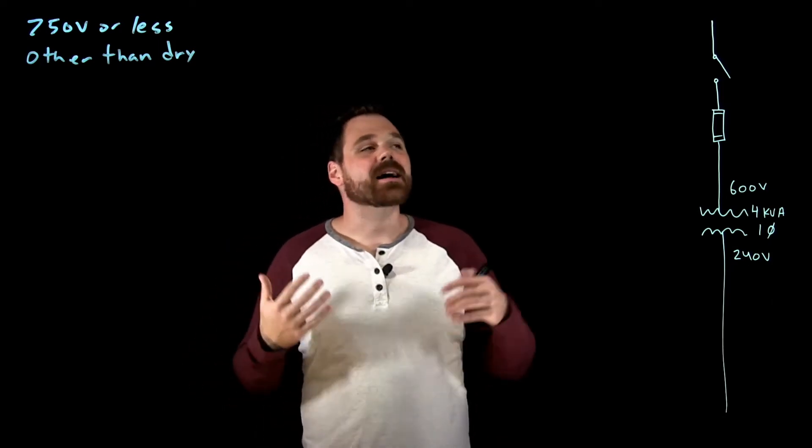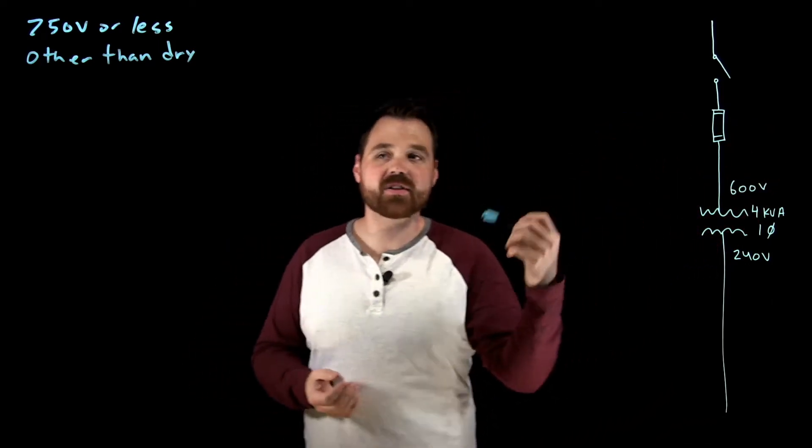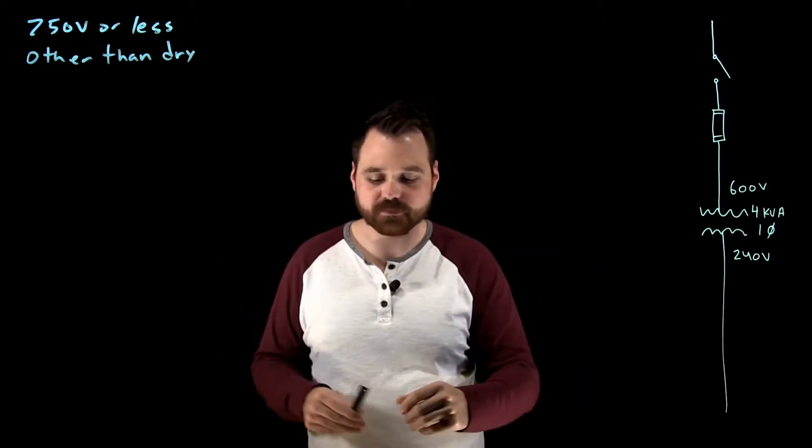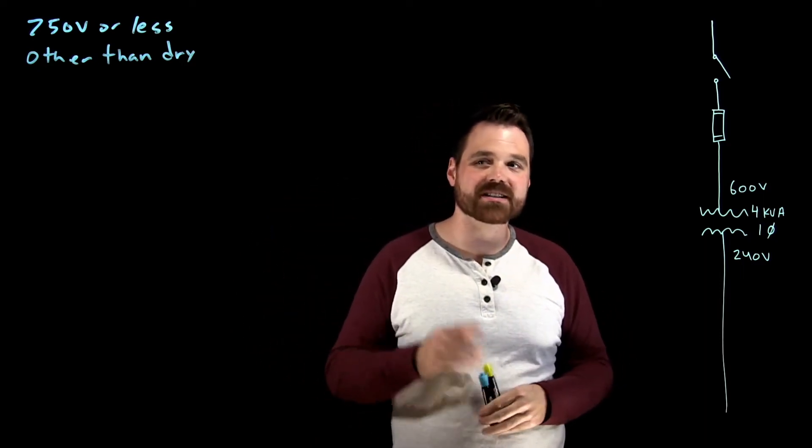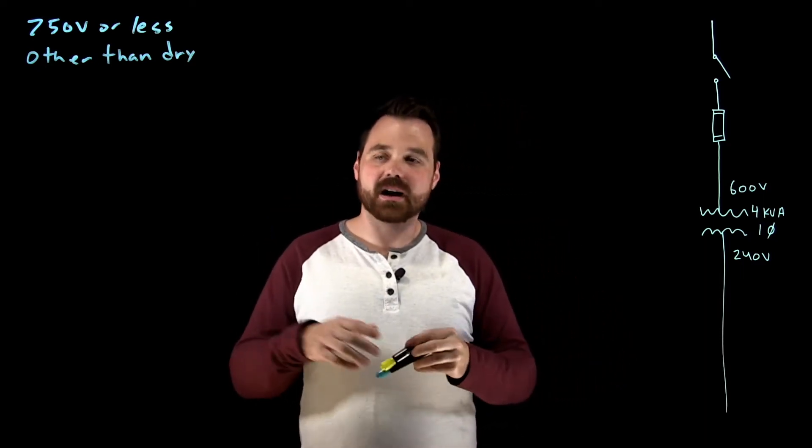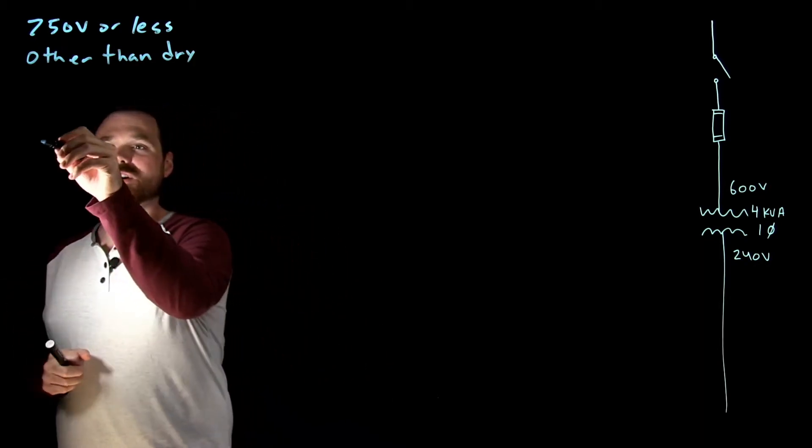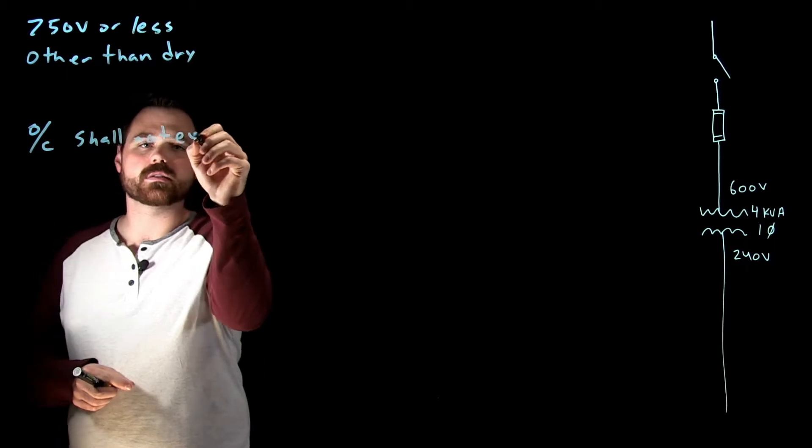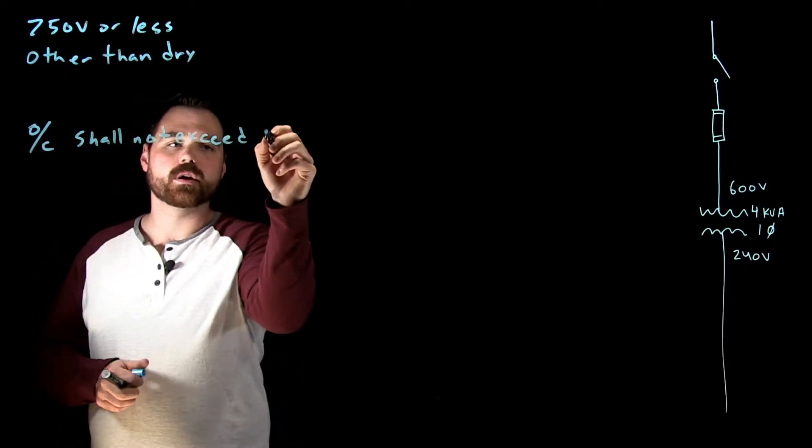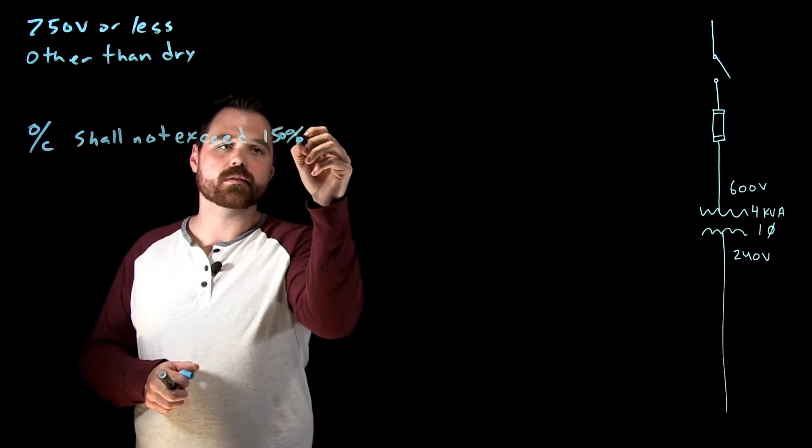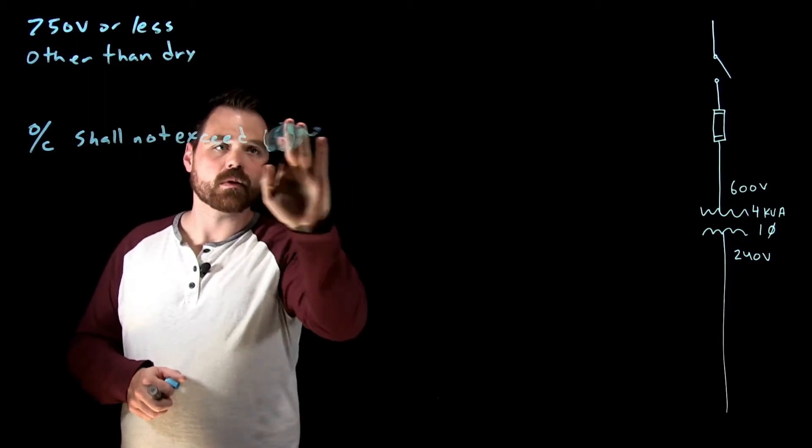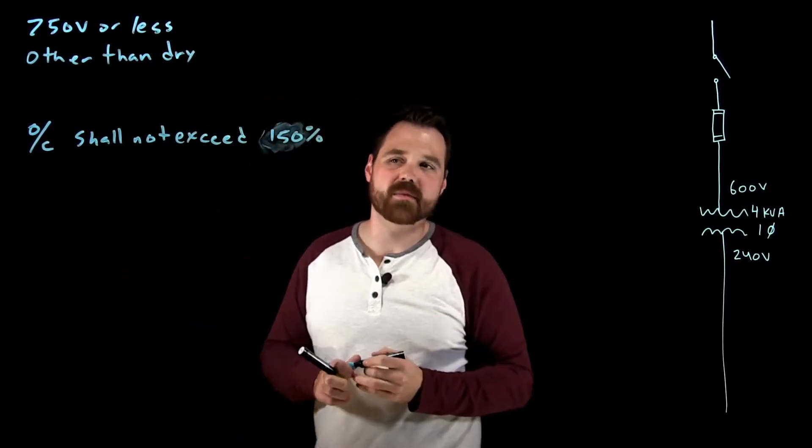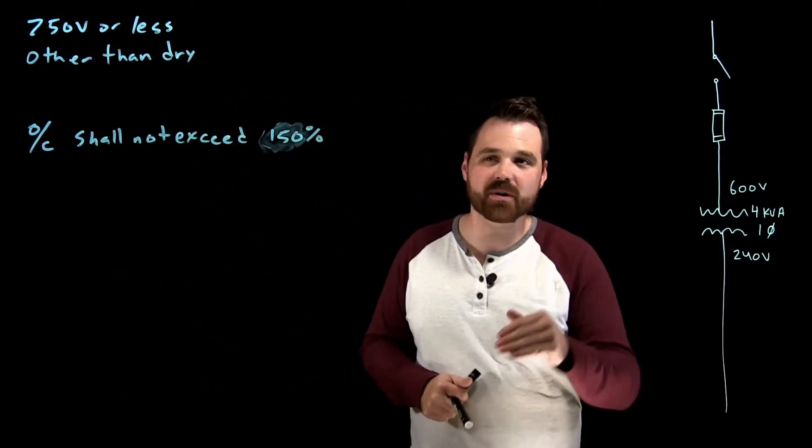It tells us that the primary overcurrent device shall not exceed 150% the rated primary current. Problem is we keep reading and it says, actually, so wait, let's take some notes here. It says OC shall not exceed 150% of rated primary current. But then it goes on to say, wait a minute.